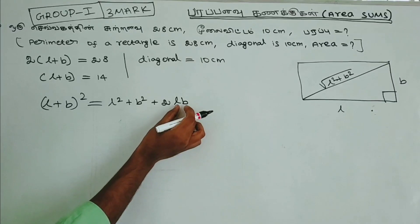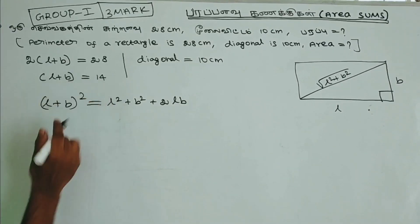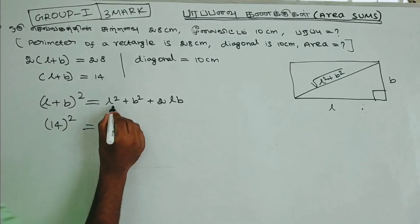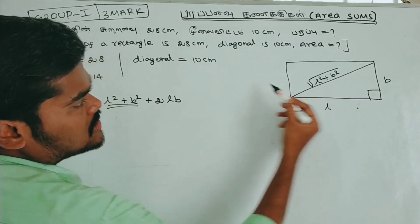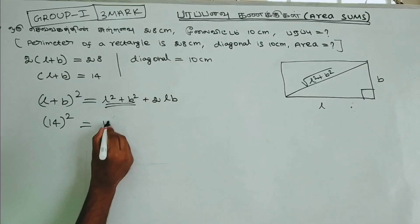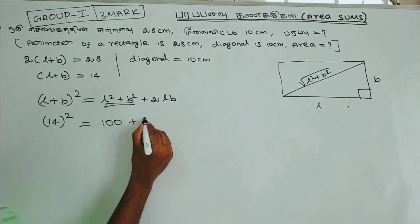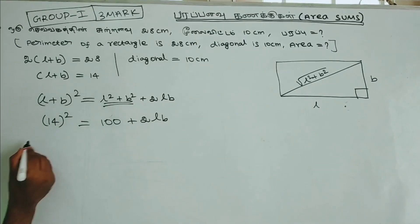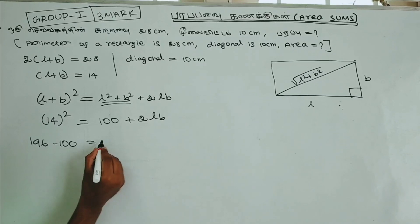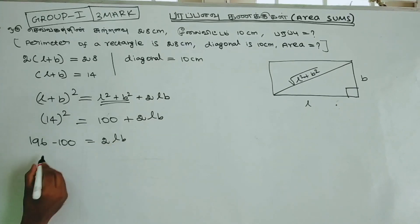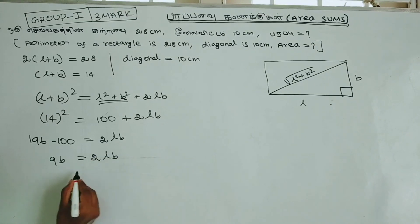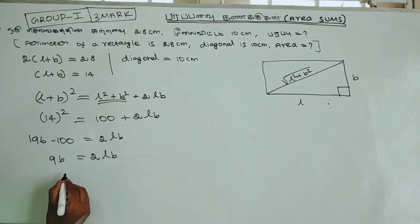With L + B = 14, we get 14² = L² + B² + 2LB. Since the diagonal √(L² + B²) = 10, we have L² + B² = 100. So 196 = 100 + 2LB, giving 2LB = 96, and LB = 48. The required area is 48.